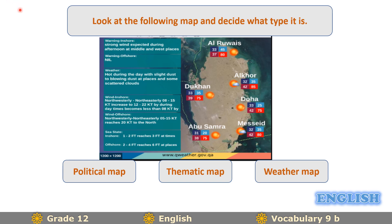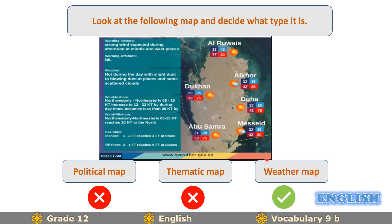To start our lesson, I'd like you to look at the following map and decide what type it is. Is it a political map, a thematic map, or a weather map? A political map shows borders for countries or states, a thematic map is a special-purpose map created to display information about a topic, and a weather map shows information about the weather. So this map is of course a weather map.